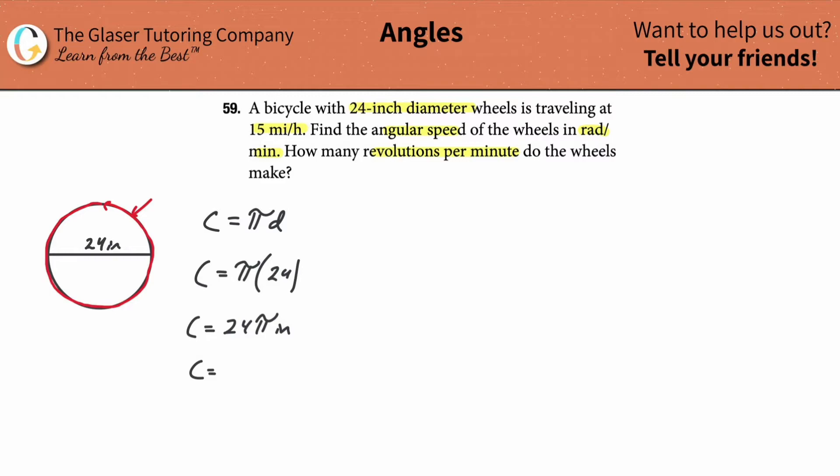Now, nobody really likes to work with pi, so you can throw it into the calculator. Take 24 and multiply it by pi, and you get an answer of about 75.4 inches. Either answer is equivalent, just so you know.